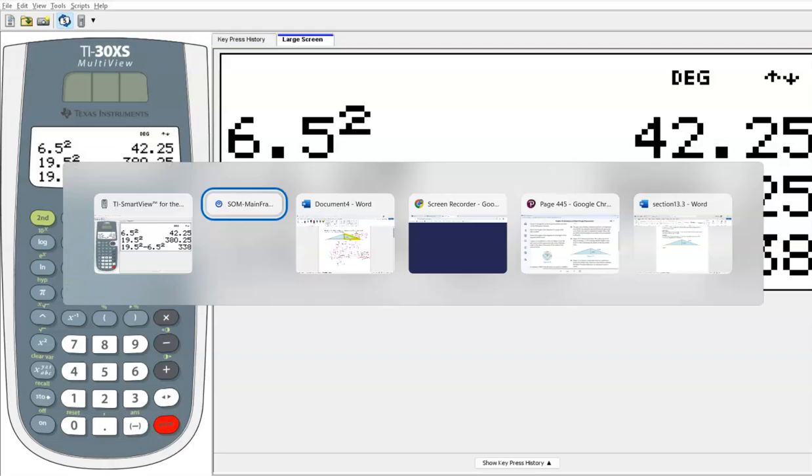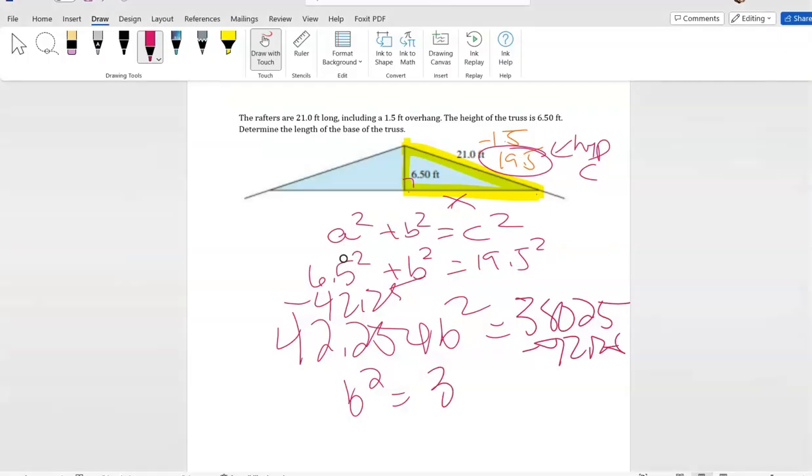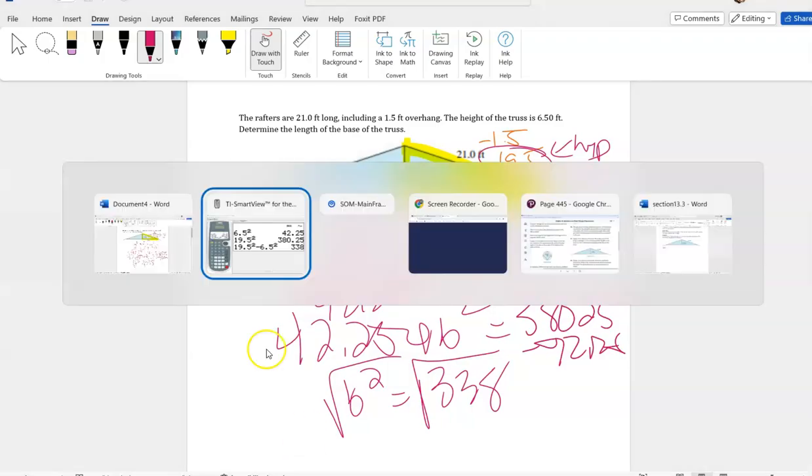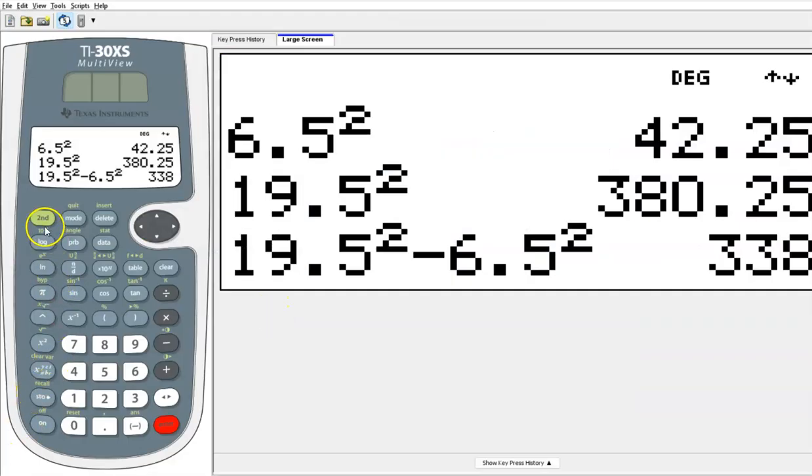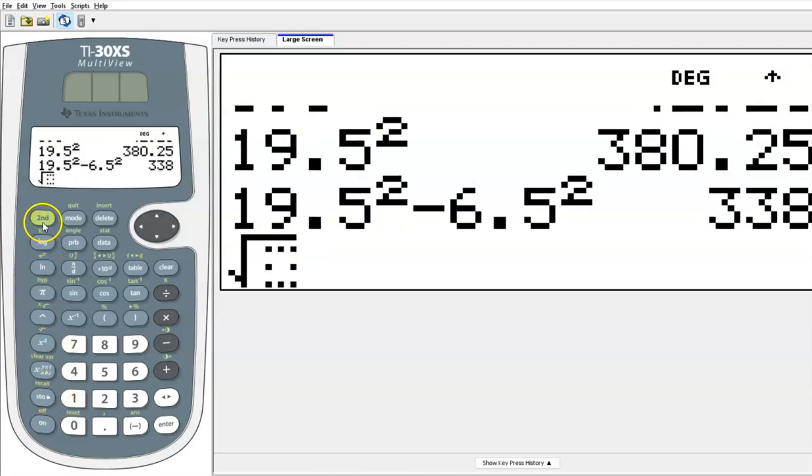So this is 338, but I'm not done. Now I have to take the square root. So I'm going to take the square root, and I'm gonna use my answer button, so I don't even have to rewrite it. Obviously the 338's pretty easy, but some of them are not.